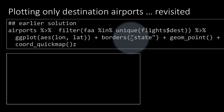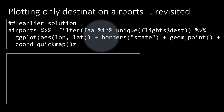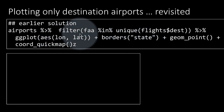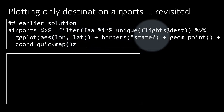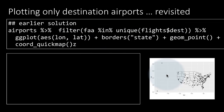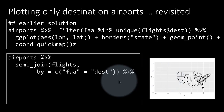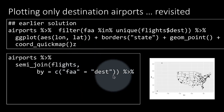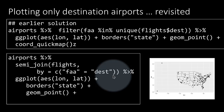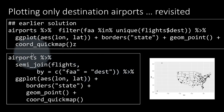We can also plot only the destination airports, revisiting a previous solution more elegantly. Earlier we wrote: filter FAA in unique(flights$destination), etc. But now, using semi-join, we can write: airports semi-join flights by equals c(FAA equals dest). This retains only those airports for which the FAA code occurs in the destination column. Then we can go ahead and plot it — a much more elegant solution than the previous hard-to-read version.